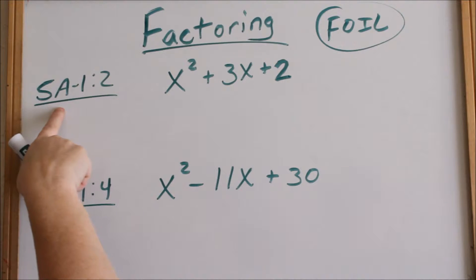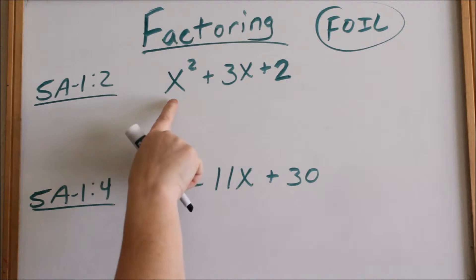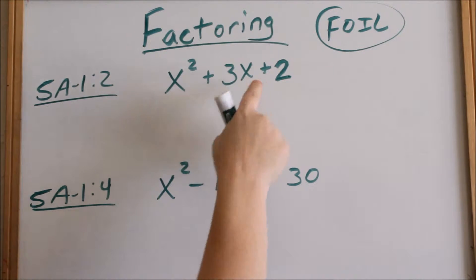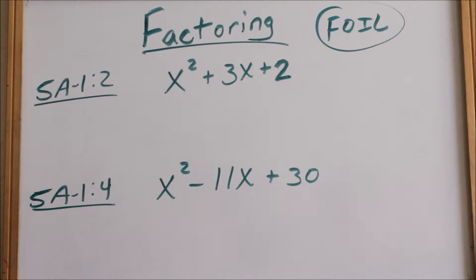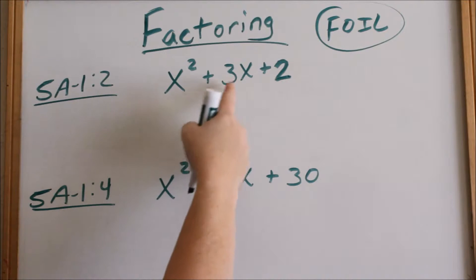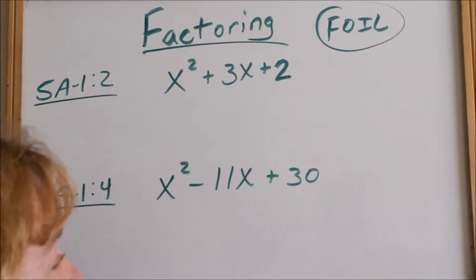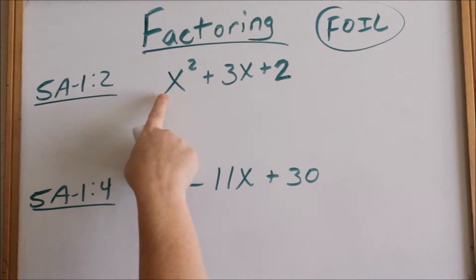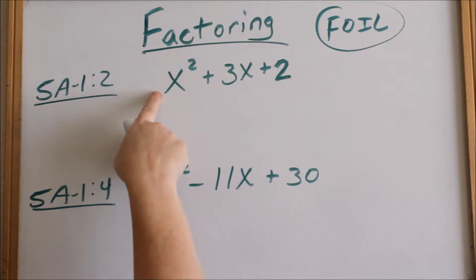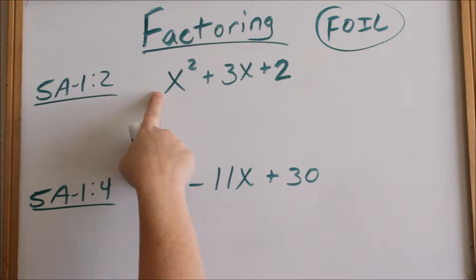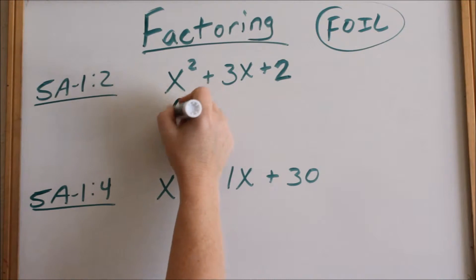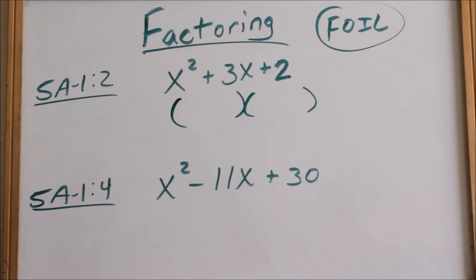We're looking at page 5A1, problem number 2. This is the easiest thing to factor, where you have a positive and a positive. The first thing you do is look at the signs. When you have a positive positive, I like to say you're in a positive world. The first thing you look for in factoring is can you factor anything out of the numbers. This is a coefficient of 1, so you have 1, 3, 2. You cannot factor anything out of the numbers, so you're ready to go to two parentheses.